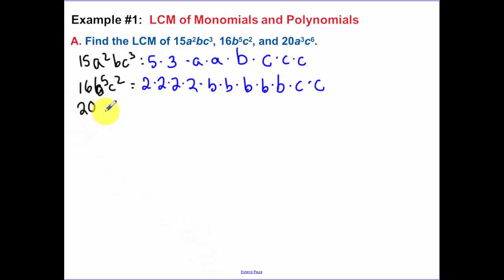Lastly for 20 a cubed c to the 6th. We have a 4 times a 5, well that's a 2 times a 2 times a 5. We have a to the 3rd and c to the 6th. Now for your least common multiple, you have to pick essentially the highest power. So the highest power of my 2's is 2 to the 4th. That's going to also take care of these 2's. This has a 5 and this has a 5, so I need a 5.